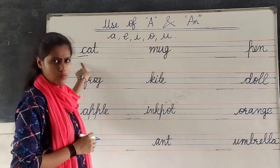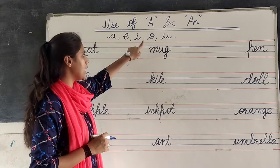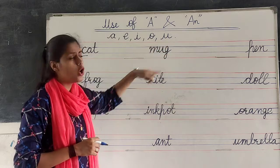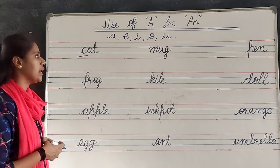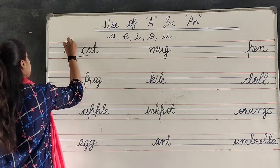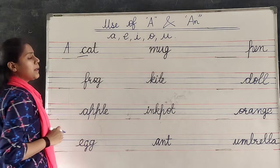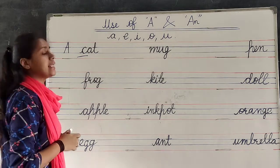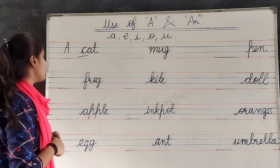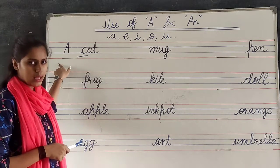No. So, then we have to write here, A. Okay? If it is not vowel, then you have to write A.